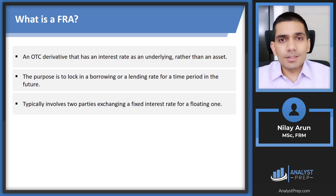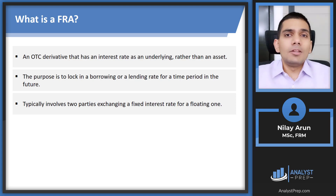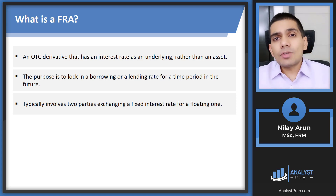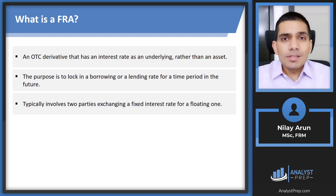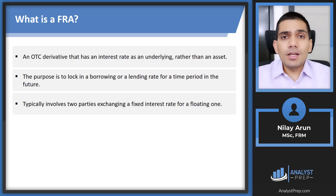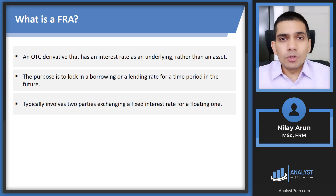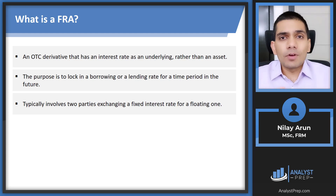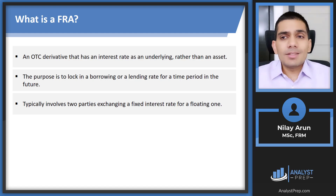The two parties — the borrower and the lender — enter into a contract where they fix the interest rate of a loan to be given in advance. The borrower wants to borrow in the future and is afraid rates might go up; the lender wants to lend in the future and is afraid rates might go down. They come together and decide the borrowing/lending rate in advance — that is the FRA rate, a fixed rate.